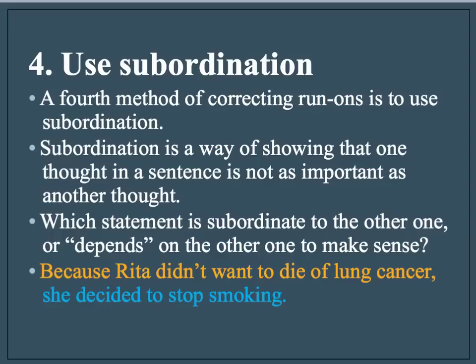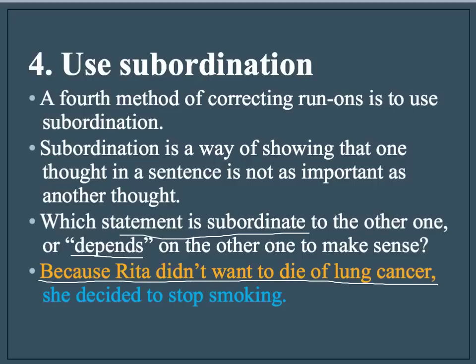A fourth option is to use subordination. Subordination is a way of showing that one thought in a sentence is not as important as the other thought. Take a look at this example — which statement is subordinate to the other one, or depends on the other one to make sense? Because Rita didn't want to die of lung cancer, she decided to stop smoking. "Because Rita didn't want to die of lung cancer" is the subordinate clause or dependent clause. It cannot stand alone; it depends on the main clause: "she decided to stop smoking." Now that we know what subordination is, we can use it to correct fused sentences and comma splices.